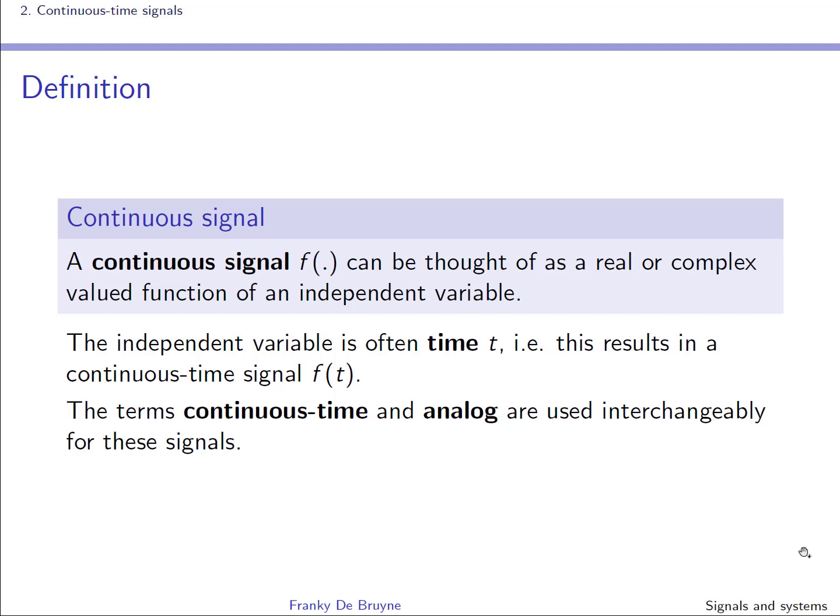A continuous signal can be seen as a real or complex valued function of an independent variable. In this course, the independent variable will always be time, but in reality you have to deal with signals which are a function of time, space variables, or a mix of time and space variables. The terms continuous time and analog will be used interchangeably in this course.